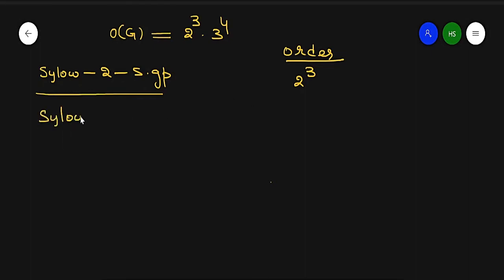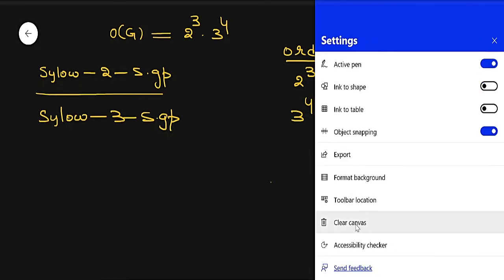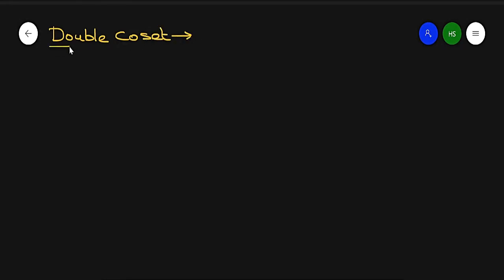Similarly, there can be one or more Sylow 3-subgroups of order 3⁴, and they are all conjugate to each other. We will prove this in Sylow's second theorem. First, we discuss some definitions needed for the proof.